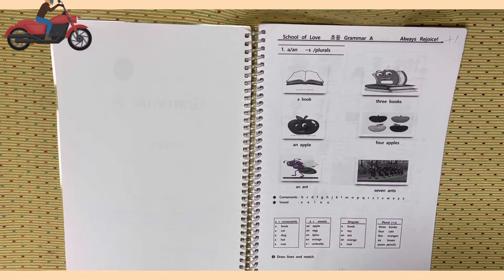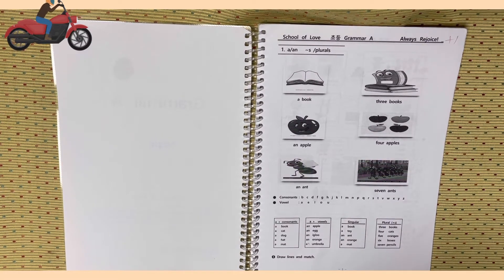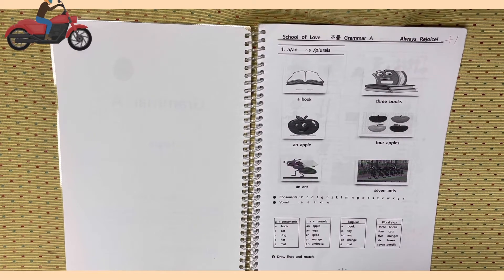Consonants: B, C, D, F, G, H, J, K, L, M, N, P, Q, R, S, V, W, X, Y, Z. Vowels: A, E, I, O, U. A plus consonant.